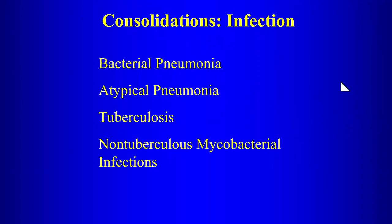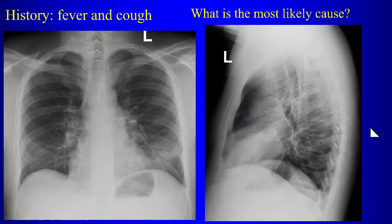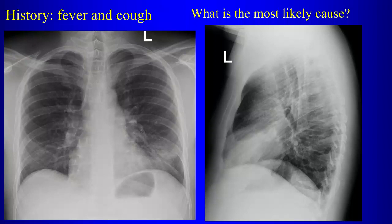Continuing with our discussion of airspace disease, today we continue with infections. Starting with this case — what is the finding, what's abnormal here? There's no right lingula, so your interpretation of this would be pneumonia of the lingula.